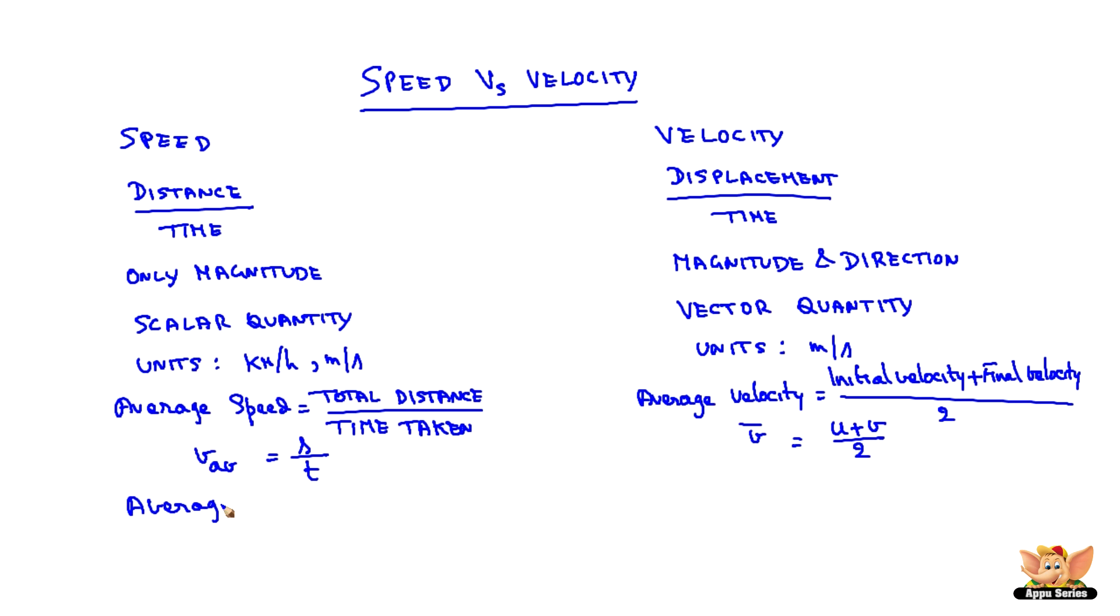Average speed can never be zero, whereas average velocity, since it depends on the displacement, can be zero.